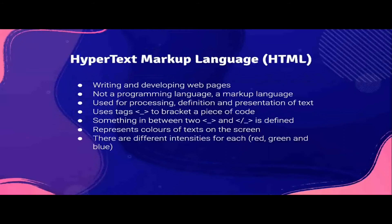Next, hypertext markup language, which is HTML. This is used when writing and developing web pages. This is not a programming language, but a markup language. It's used for processing, definition, and presentation of text. They use tags to bracket pieces of code — something in between a tag and a tag with a slash is considered defined. HTML color codes are used to represent colors of text on the screen, with codes for different intensities of red, green, and blue, which are the primary colors.